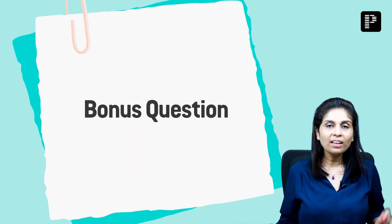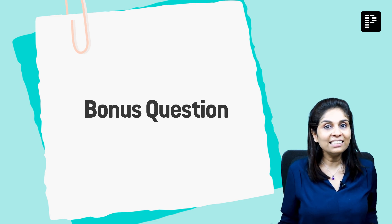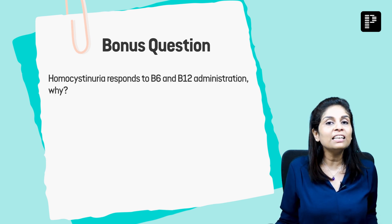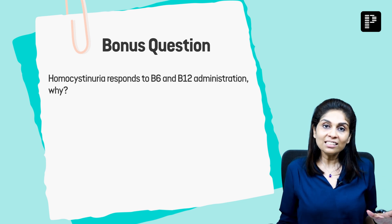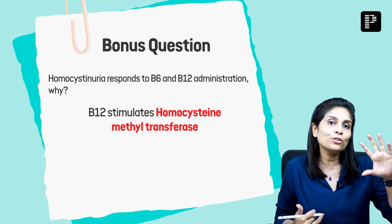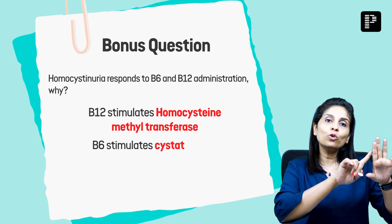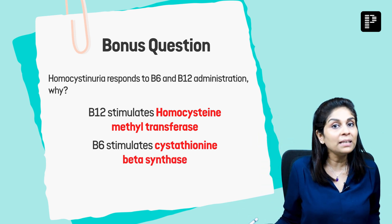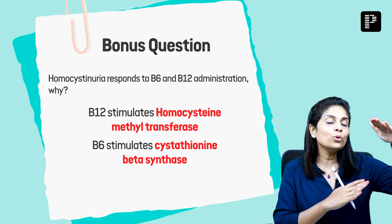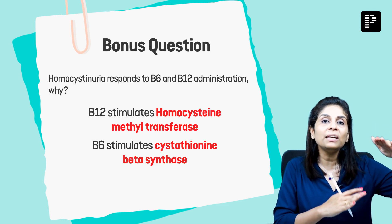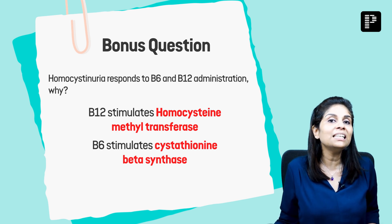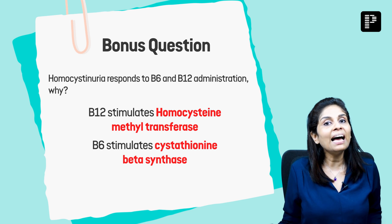Now the bonus question — pause the video for 30 seconds and come back to check your answer. The question is: homocystinuria responds to B6 and B12 administration. Why? The rationale is that homocysteine must be converted to either cysteine or methionine to avoid the ill effects of homocystinuria. To convert homocysteine to cysteine, you need cystathionine beta synthase, which is dependent on B6. To convert homocysteine to methionine, you need methionine synthase, which is dependent on B12 and folate. So whenever you see a patient with homocystinuria, supplement with B6, B12, and folate.